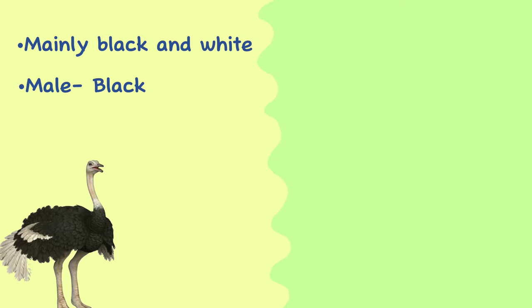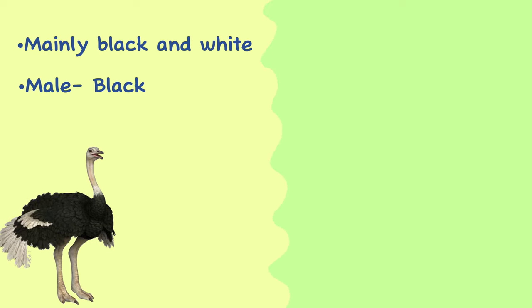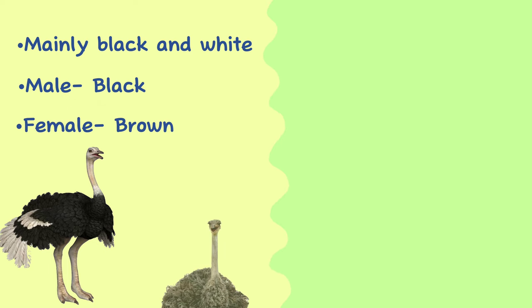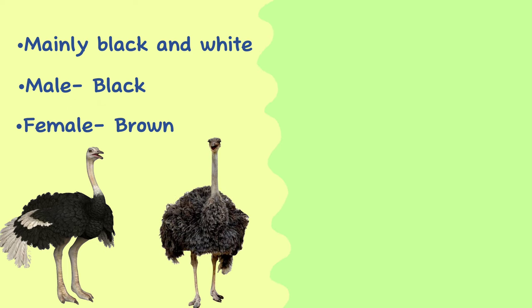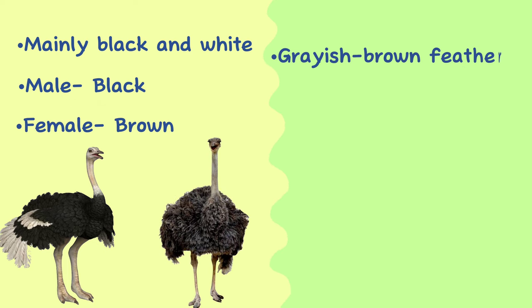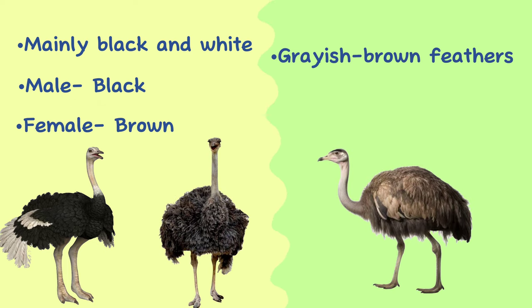Color. Ostrich feathers are mainly black and white, with males having predominantly black feathers and females having more brownish ones. Rheas have grayish-brown feathers, giving them a more uniform appearance compared to the contrasting colors seen in ostriches.